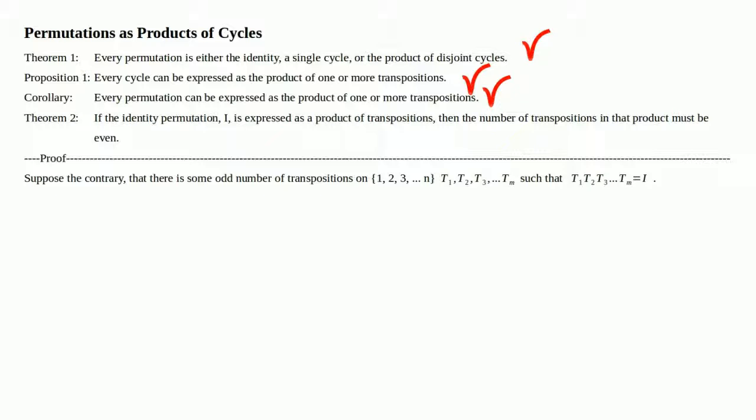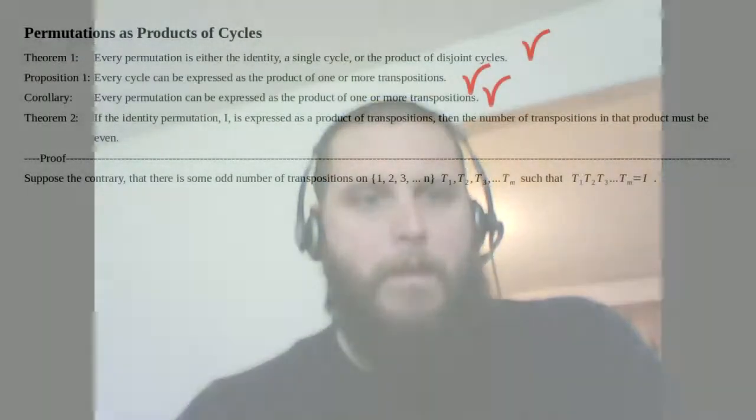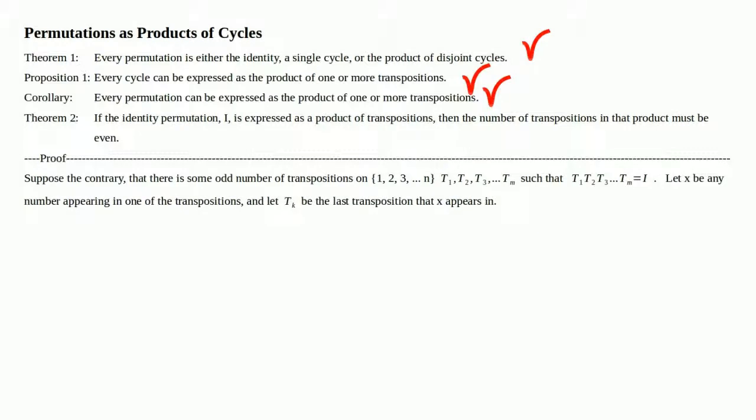Although it may not be apparent, our aim is to obtain a contradiction to the fact that no single transposition can be the identity permutation. We will do this by successively eliminating transpositions from the product t₁ through t_m until we finally have a single transposition equal to I. That's impossible — a transposition swaps two entries, while the identity moves nothing, so a single transposition can never be the identity.